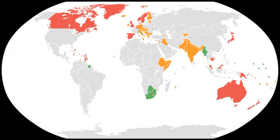Parliamentarianism is the dominant form of government in Europe, with 32 of its 50 sovereign states being parliamentarian. It is also common in the Caribbean, being the form of government of 10 of its 13 island states, and in Oceania. Elsewhere in the world, parliamentary countries are less common, but they are distributed through all continents, most often in former colonies of the British Empire.